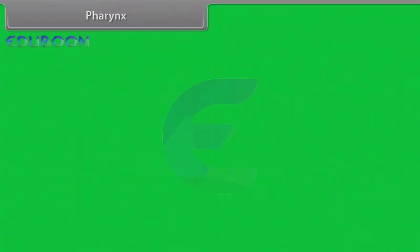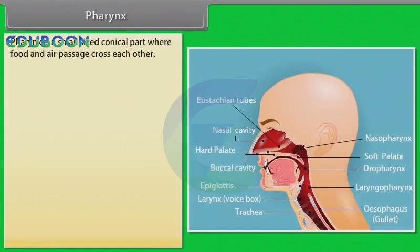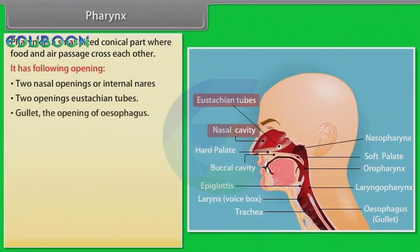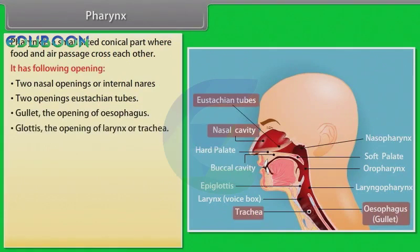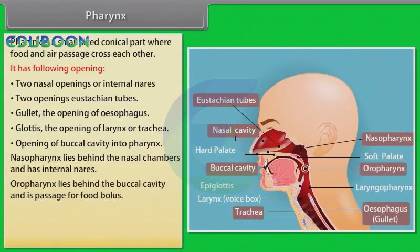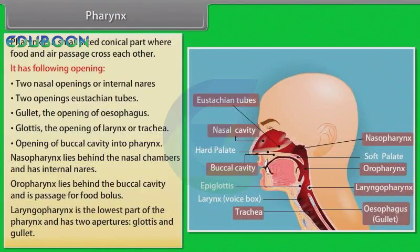The pharynx is a small-sized conical part where food and air passages cross each other. It has the following openings: two nasal openings or internal nares, two openings of the Eustachian tubes, the gullet (opening of the esophagus), the glottis (opening of the larynx or trachea), and the opening of the buccal cavity into the pharynx. The nasopharynx lies between the nasal chambers and has internal nares. The oropharynx lies behind the buccal cavity and is a passage for the food bolus.